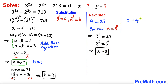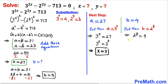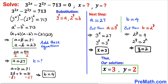Now focusing on b equals 4, and recalling that b equals 2^y, we get 2^y equals 4. Writing 4 as 2², we have 2^y equals 2². The bases are the same, so equating exponents gives y equals 2. Thus our final answers are x equals 3 and y equals 2.